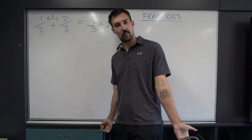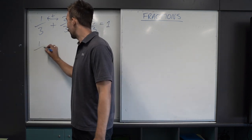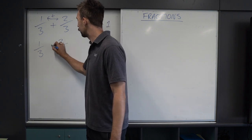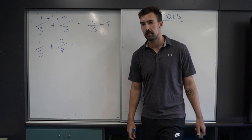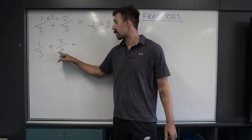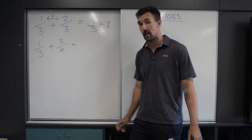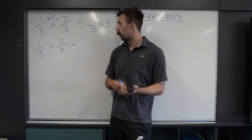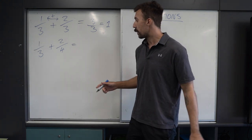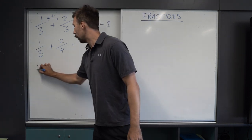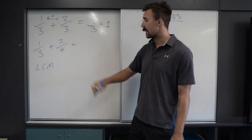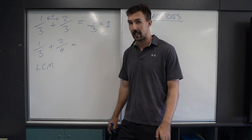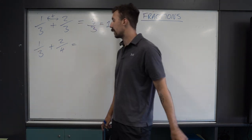What if the denominators are different? What do we do? Let's say it's 1 over 3 and 2 over 4, and we need to add them together. We can't add them unless these two denominators are the same, so we need to convert them. We do this by finding the lowest common multiple, or LCM, of both of these denominators.